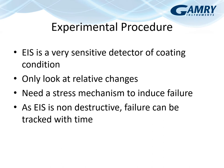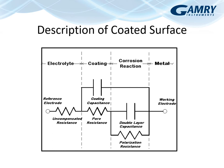EIS is a very sensitive detector of coating conditions, so we look at relative changes in a single coating over time. Often you'll want some type of stress mechanism to induce failure between EIS measurements. EIS is non-destructive, so you can track failure or deterioration with time.